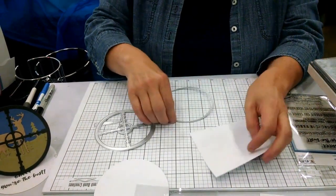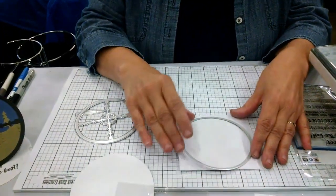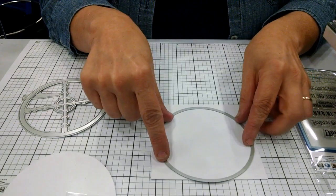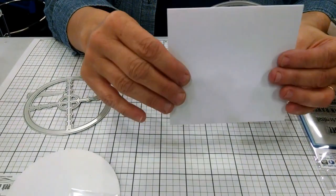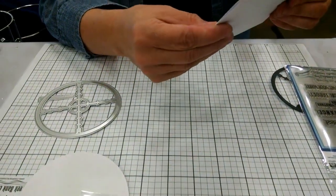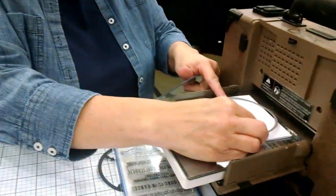You want to take that circle and you want to lay that on your paper, and you want the circle to just come off the edge at the top. And then we're going to die cut and that's going to give us the card so that it folds at the top.